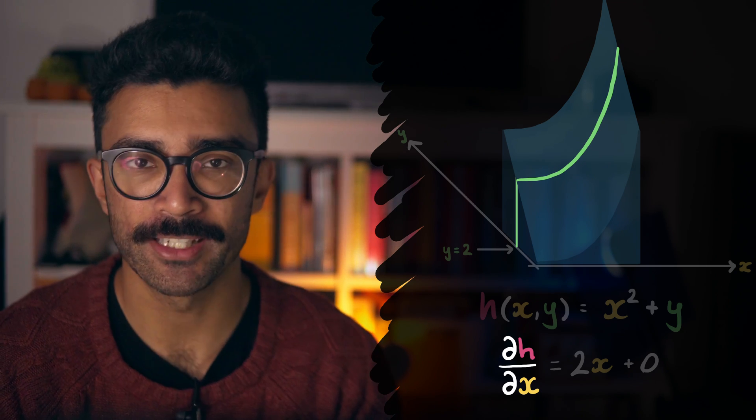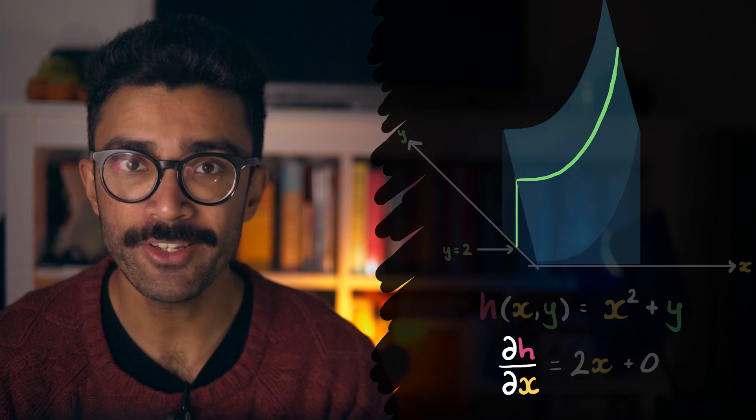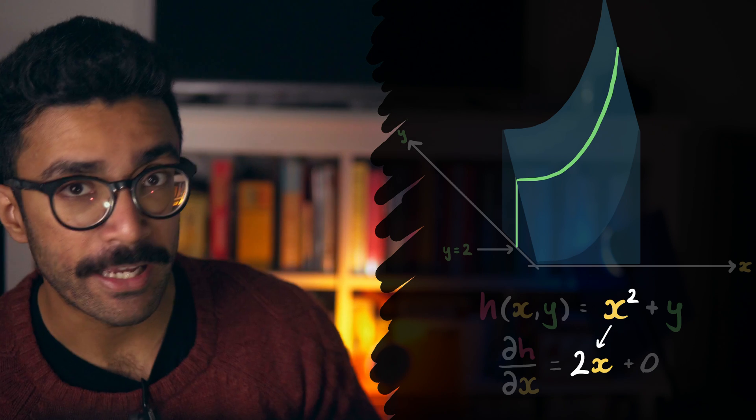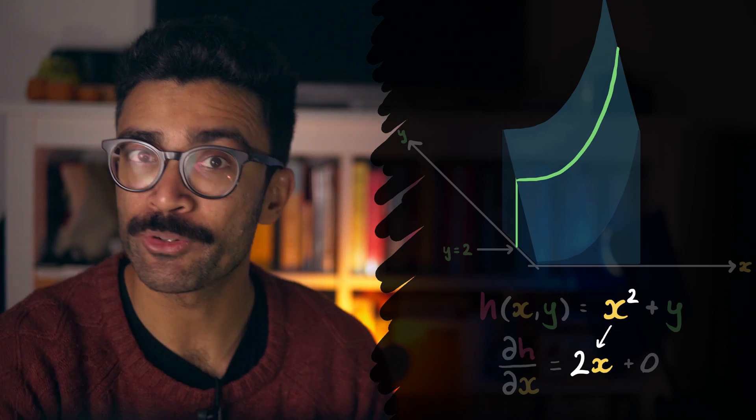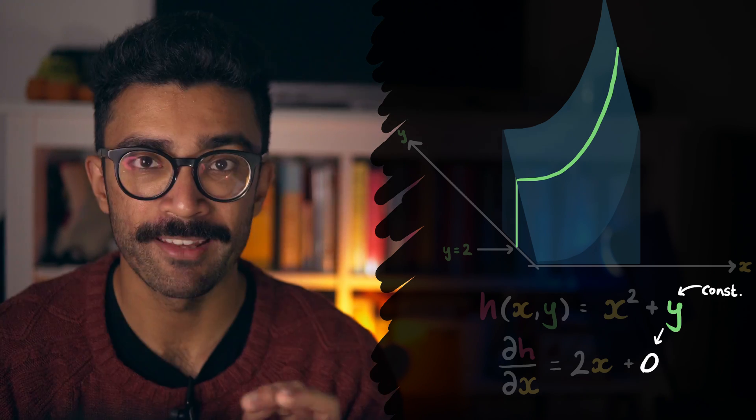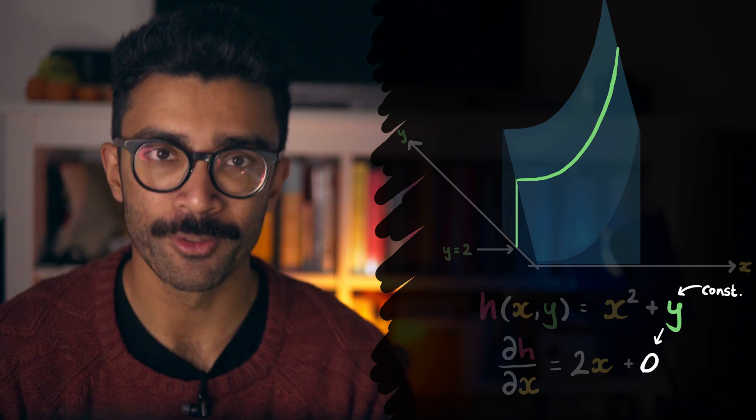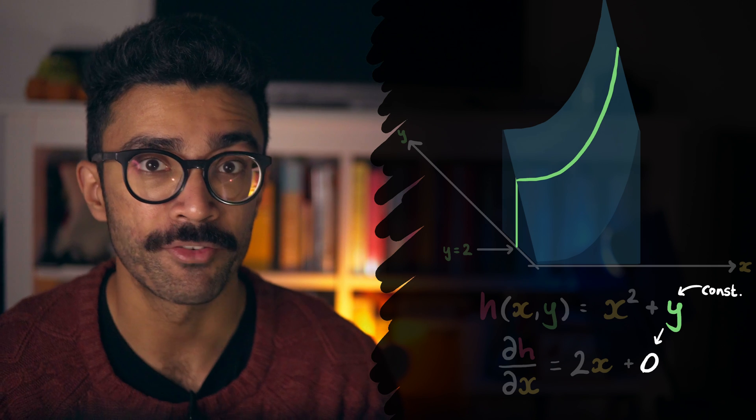Although some form of partial derivative was first seemingly calculated by Leibniz, the notation we commonly use today was first introduced by André-Marie Legendre. In this case, the partial derivative of h with respect to x is just the derivative of x squared with respect to x, because we treat y as constant. And the derivative of a constant is zero. If you're familiar with derivatives, then you'll know that the derivative of x squared is 2x.